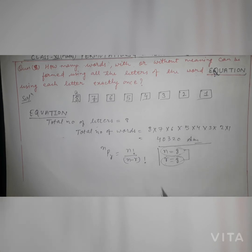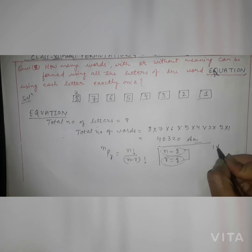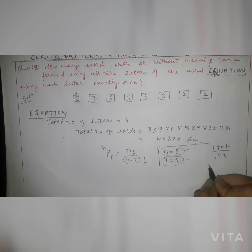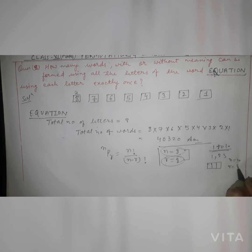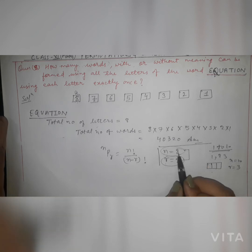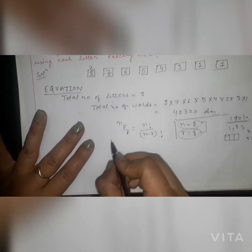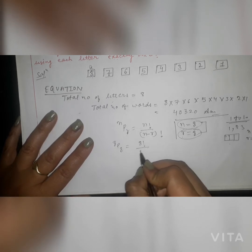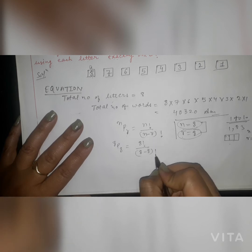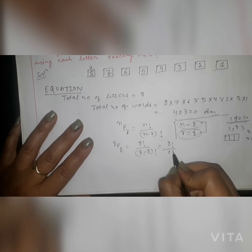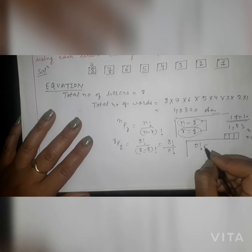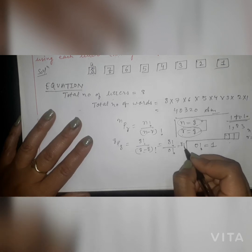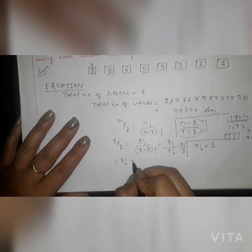So we apply the formula 8P8 = 8! / (8−8)! = 8! / 0!. Since 0 factorial is always equal to 1, this becomes 8! / 1 = 8!. Now expanding 8 factorial: 8 × 7 × 6 × 5 × 4 × 3 × 2 × 1, which gives 40320. This matches the box method result, confirming the answer.